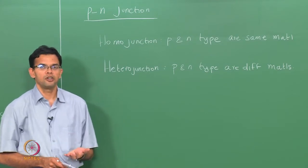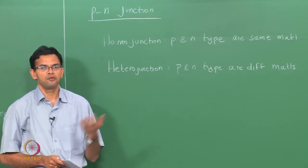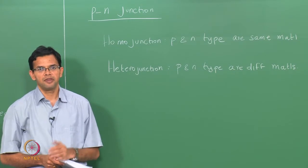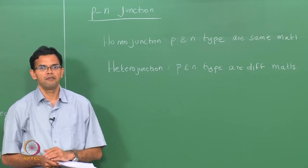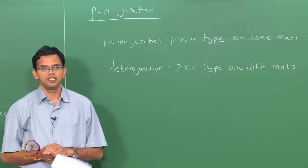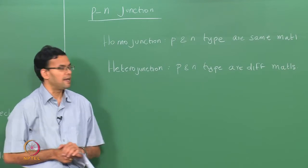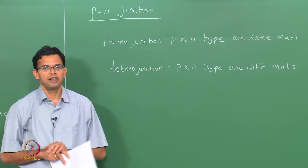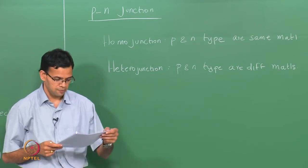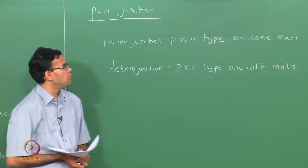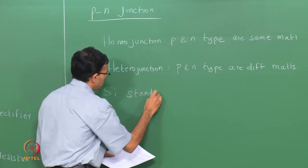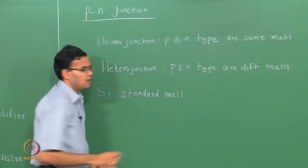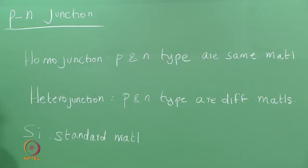Homo junctions are easier to grow because you are using the same material — all you are doing is doping one side P-type and the other side N-type, so the interfaces are easier to form. In hetero junctions, the materials must be chosen carefully to ensure a good interface with no defects. For our analysis, we will assume an ideal junction with no defects. Most of the time we will talk about P-N junctions with respect to silicon, but we will also look at compound semiconductors when we come to hetero junctions.